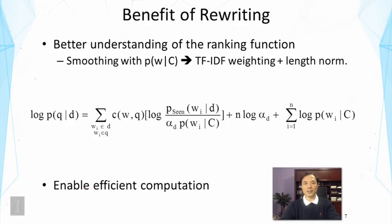The first benefit is it helps us better understand this ranking function. In particular, we're going to show that from this formula we can see smoothing with the collection language model would give us something like a TF-IDF weighting and length normalization.